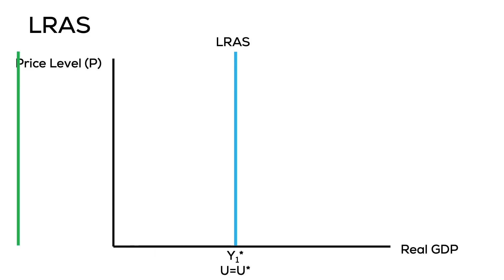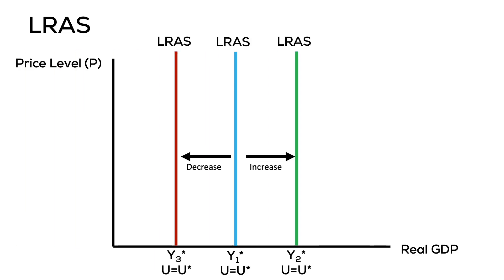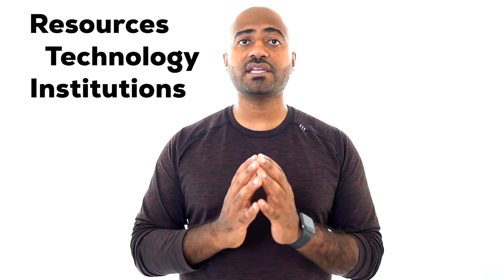At this point in the class we've introduced the components of aggregate demand, short-run aggregate supply, and we've talked about the shift factors in the aggregate demand curve and what shifts the short-run aggregate supply curve. What causes the long-run aggregate supply curve to change is everything we talked about when discussing economic growth: if you have an increase in overall resources in the economy, an increase in technology, or new laws, rules, and improvements in your institutions, it's going to cause an increase in your long-run aggregate supply curve.